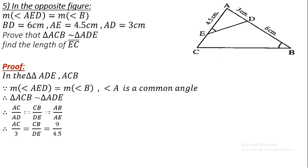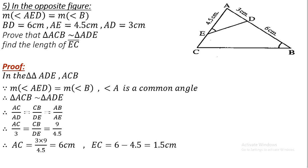To find AC, we work with the first and third ratios: AC/AD = AB/AE. Substituting: AC/3 = 9/4.5, so AC equals 4 times 3 divided by 5, giving AC equals 2.4 centimeters. Then EC equals AC minus AE... we use subtraction to find the final answer.